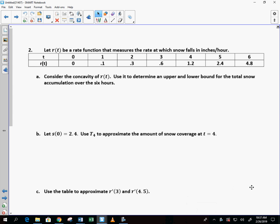We pick up where we left off. We're given a rate function. What does that point mean right there? At four hours, the rate of snow is 1.2 inches per hour.